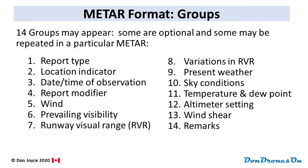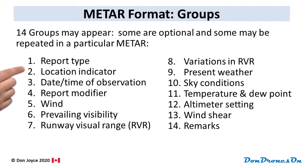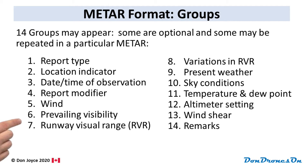A METAR is formatted into what they call groups. Fourteen groups may appear. Some are optional, so they might be missing, and some are repeated in a particular METAR to ensure all the details of that part of the report are spelled out. We're going to run through every one of these fourteen different METAR groups in order, so buckle up.